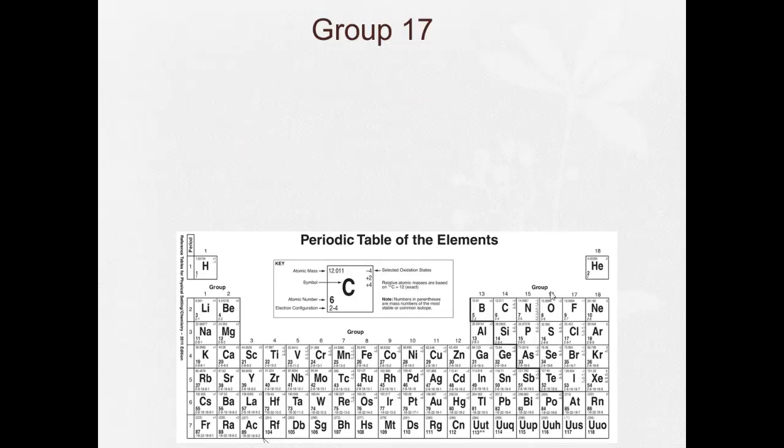Our next important group is group 17. And they are called halogens. That comes from, I want to say Latin, but it could be Greek, for salt makers. So something is halite, which you might even remember from earth science. Halite is salt. So these are going to make salts.